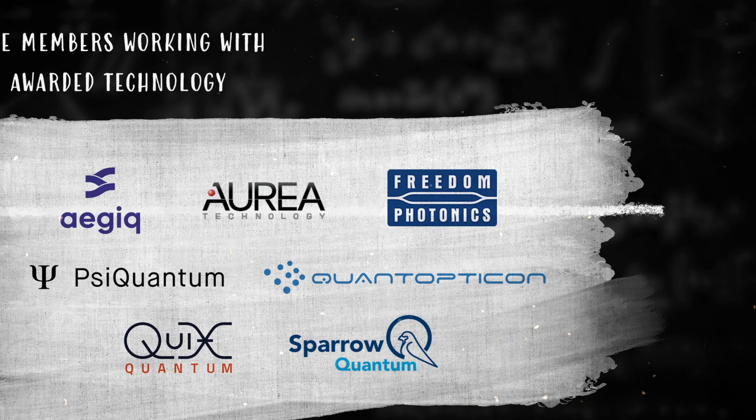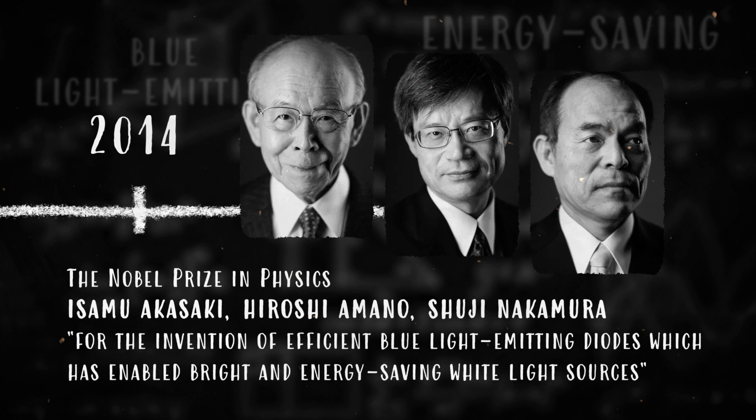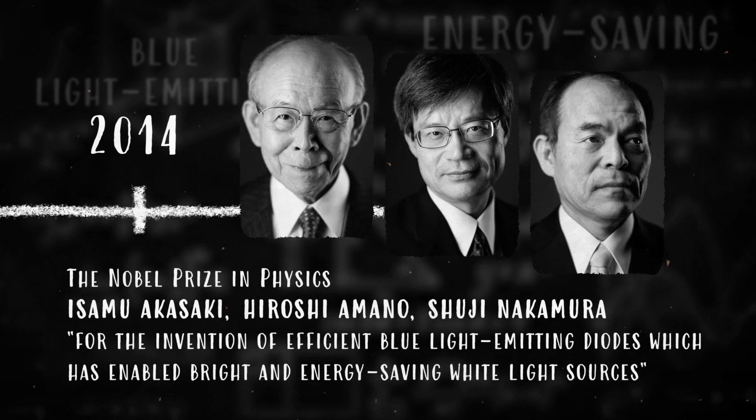The Nobel Prize in Physics 2014 was awarded jointly to Isamu Akasaki, Hiroshi Amano and Shuji Nakamura for the invention of efficient blue light-emitting diodes which has enabled bright and energy-saving white light sources.